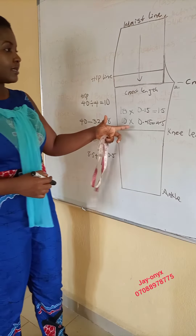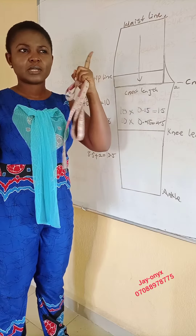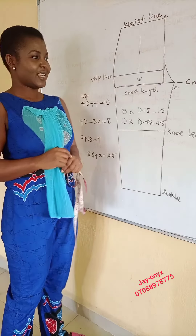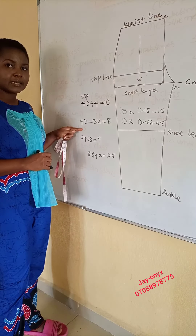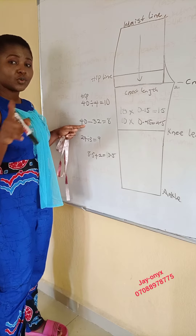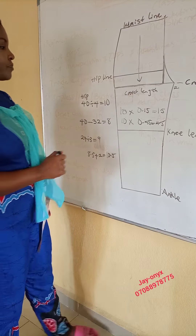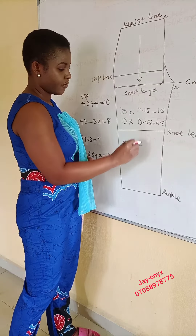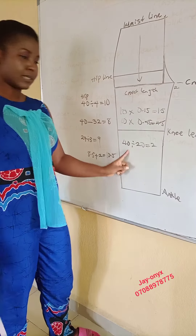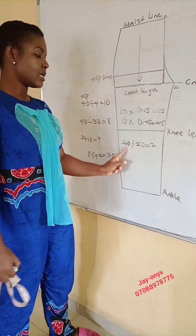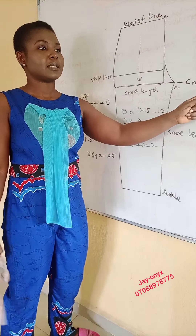Method 4 for crotch extension: divide the hip circumference by 20 for the front. With a hip of 40, 40 divided by 20 gives us 2 inches. We add this amount from the hip box line to extend our front crotch. For the back, divide the hip by 10: 40 divided by 10 gives us 4 inches as the back crotch extension.